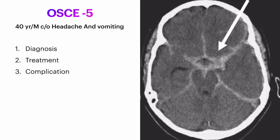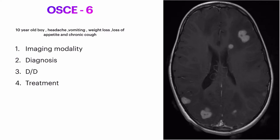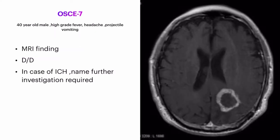Question six: a young boy came with complaint of headache, vomiting, weight loss, and chronic cough lasting more than two weeks. Name the imaging modality shown. Write down the diagnosis, differential diagnosis in this case, treatment options, and the indication for starting steroids in this patient.